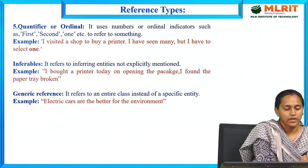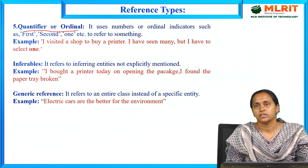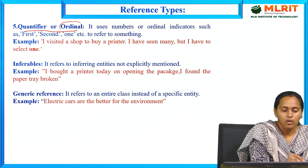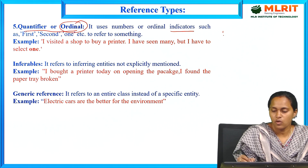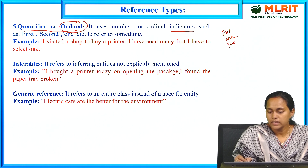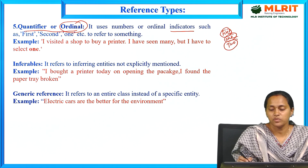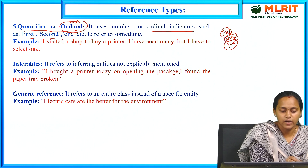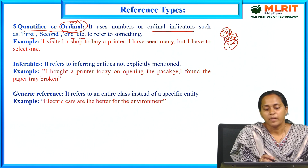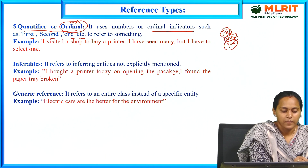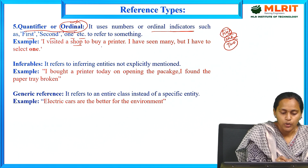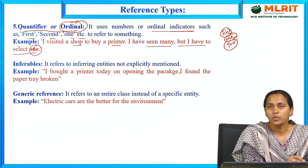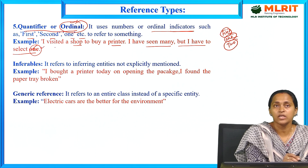Quantifier or ordinal reference uses numbers or ordinal indicators such as 'first,' 'second,' 'one,' etc., to refer to something specific. In natural language processing and discourse processing, ordinal means specific indicators. Example: 'I visited a shop to buy a printer. I have seen many, but I have to select only one.' The specification of 'only one' makes this an ordinal reference example.